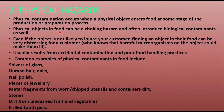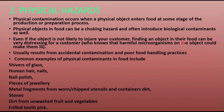Moving to the second hazard — physical hazard. Physical contamination occurs when a physical object enters into food at some stage of the production or preparation process. Physical objects in food can be a choking hazard or can introduce biological contaminants as well. Even if the object is not likely to injure the consumer, finding some sort of object — a stone or hair — in food can be very distressing. Physical hazards usually result from accidental contamination and poor handling practices.